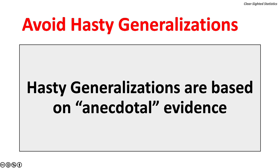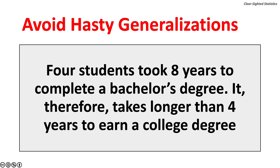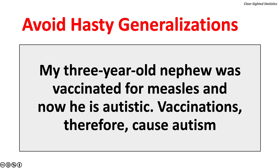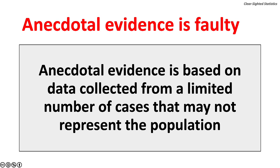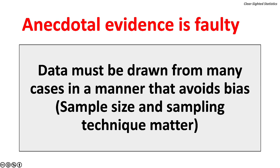Hasty generalizations are based on anecdotal evidence. Here are examples: two friends bought new iPhones that broke — Apple, therefore, is selling defective products. Four students took eight years to complete a bachelor's degree — it, therefore, takes longer than four years to earn a college degree. My three-year-old nephew was vaccinated for measles and now he's autistic — vaccinations, therefore, cause autism. Anecdotal evidence is faulty because it is based on data collected from a limited number of cases that may not represent the population, and lacks scientific verification. Data must be drawn from many cases in a manner that avoids bias. Sampling size and sample technique matter.